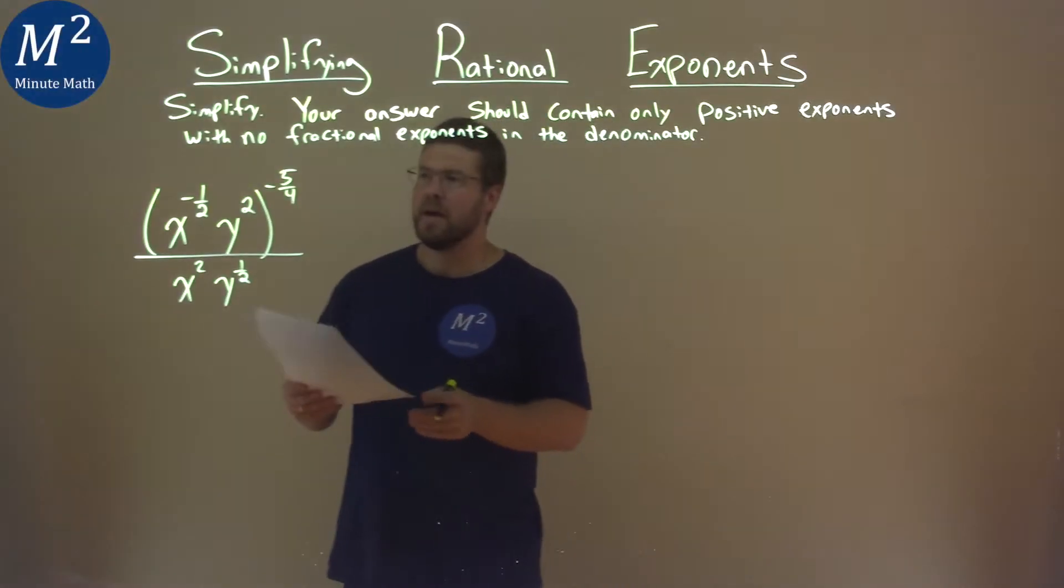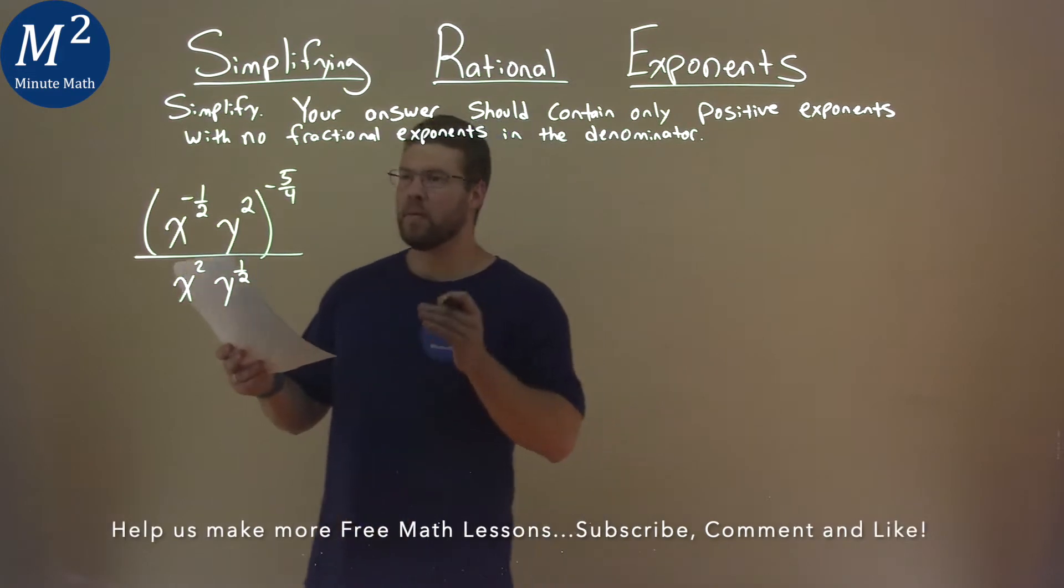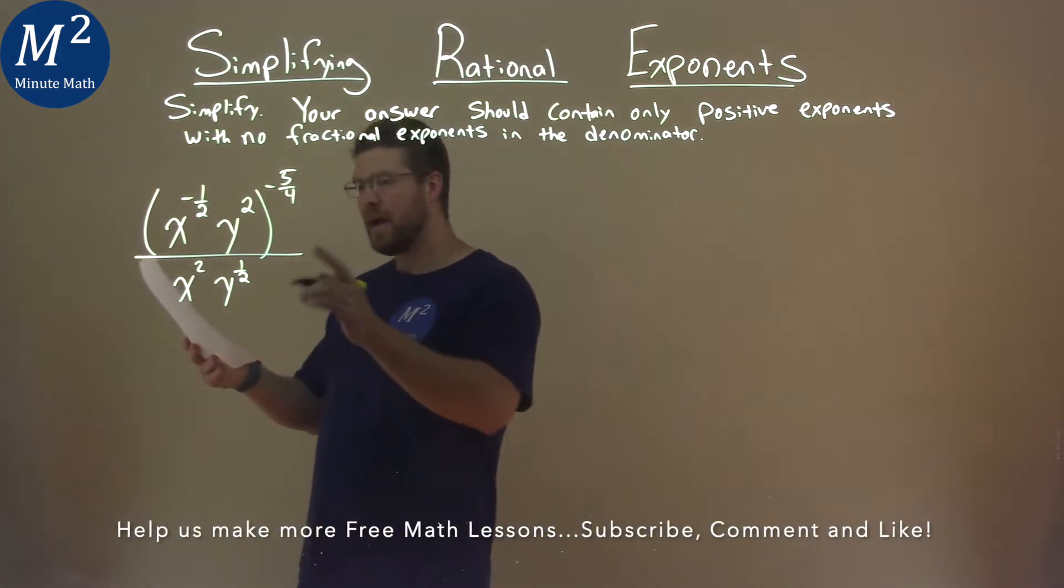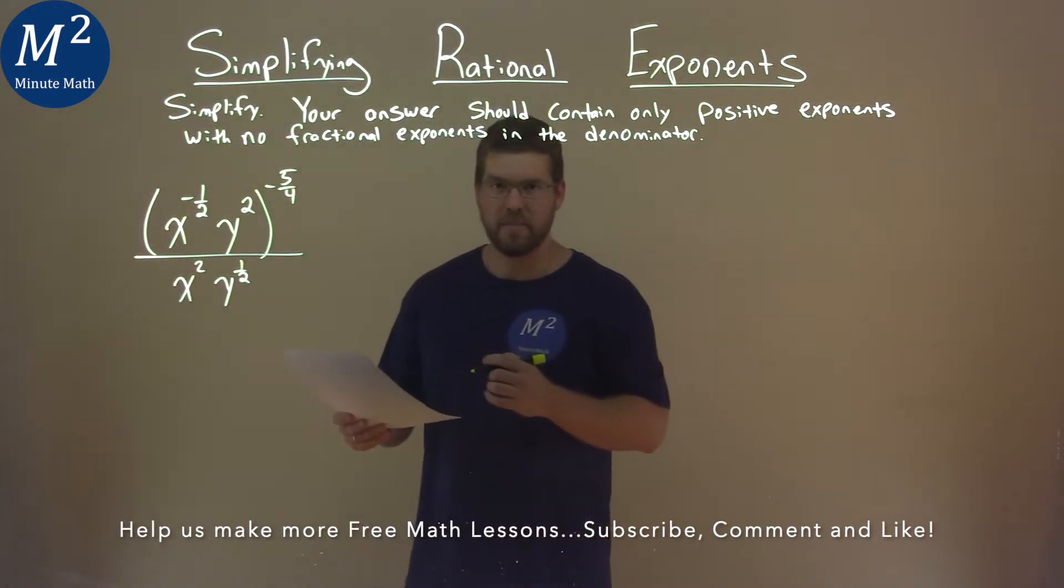We're given this problem right here, x to the negative one-half power, y squared, all to the negative five-fourths power, over x squared times y to the one-half power, and we've got to simplify.